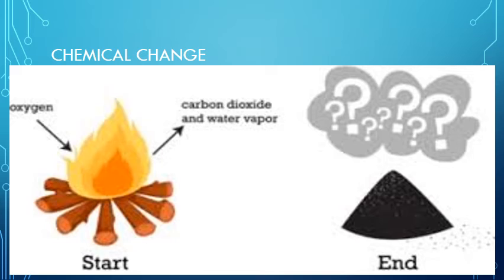In a chemical change, a new substance is formed and it is not a reversible process — we can't get back the original substance. If someone asks the difference between physical and chemical change, the main difference is this: in a physical change, no new substance is formed, while in a chemical change, a new substance is formed. Physical change is a reversible process, but chemical change is not.